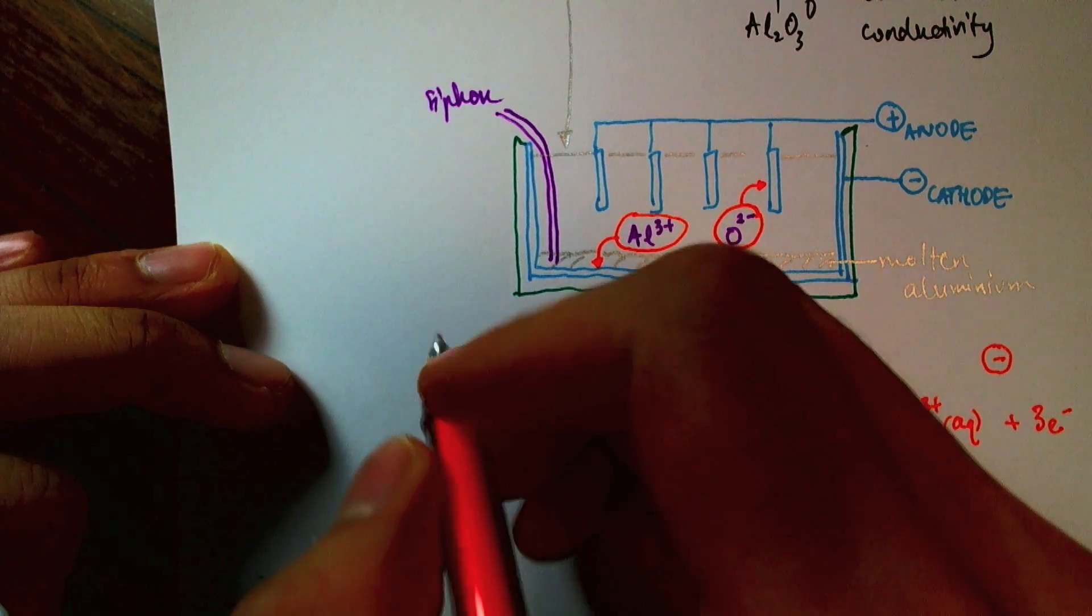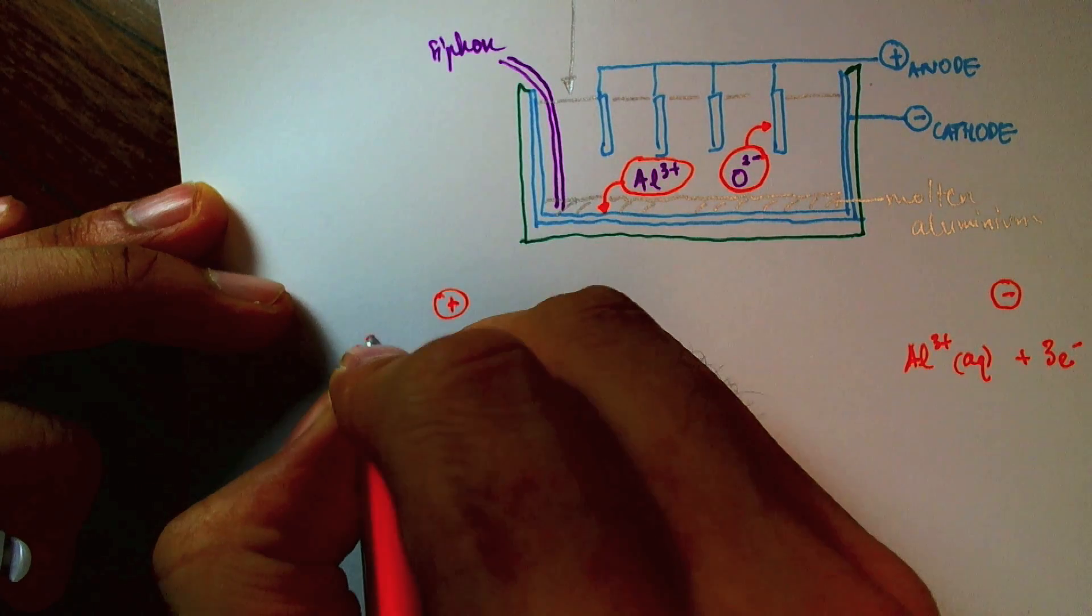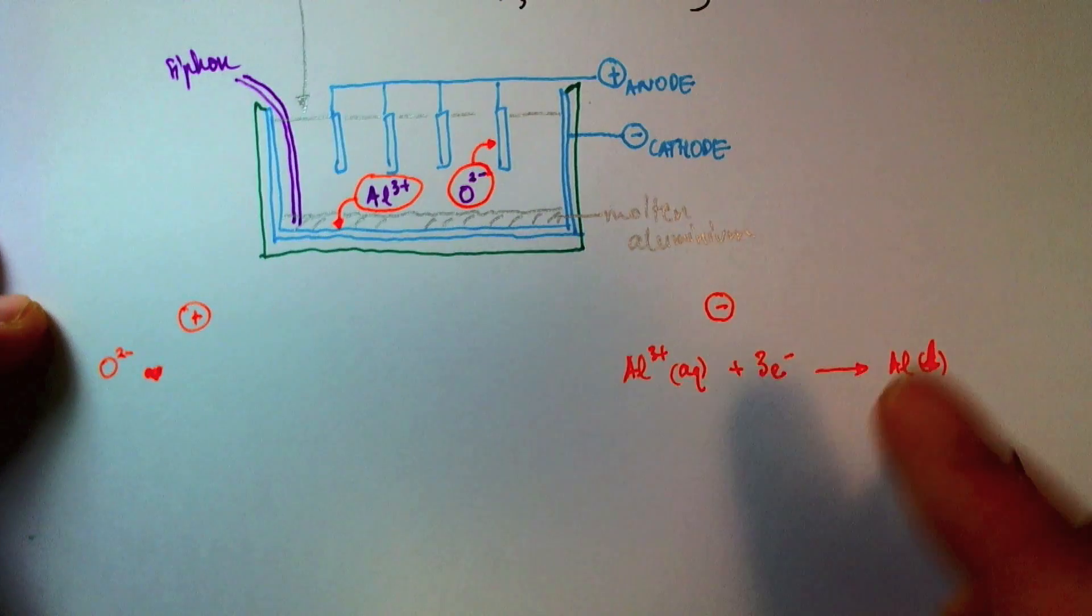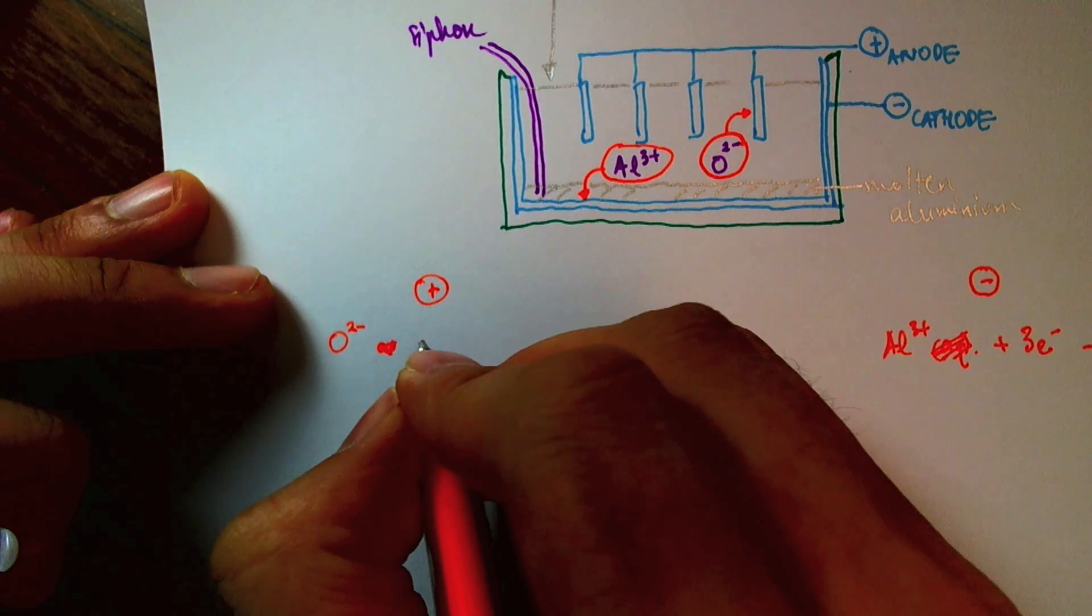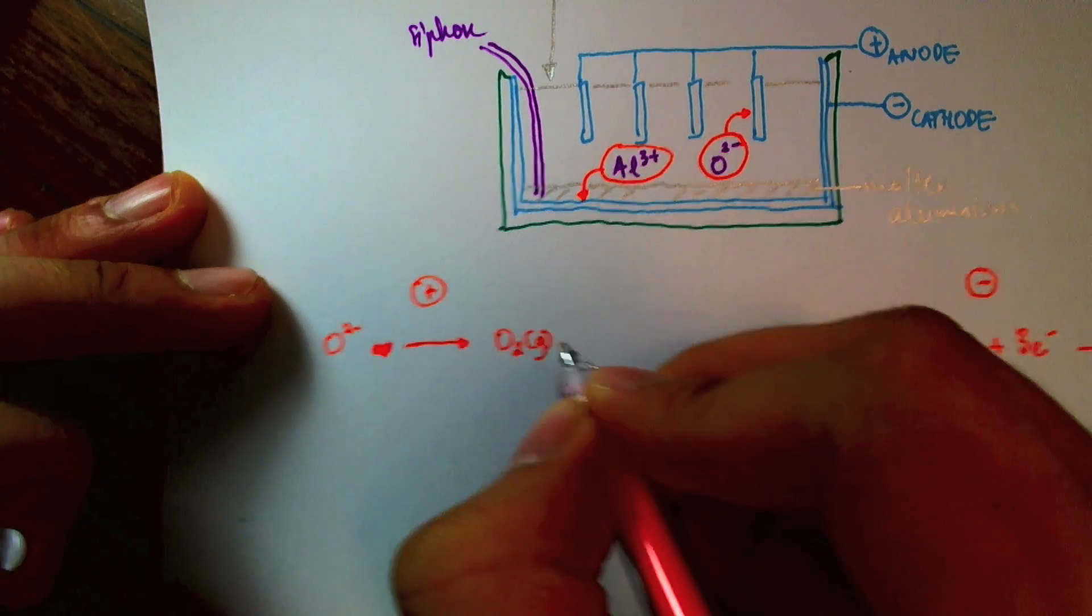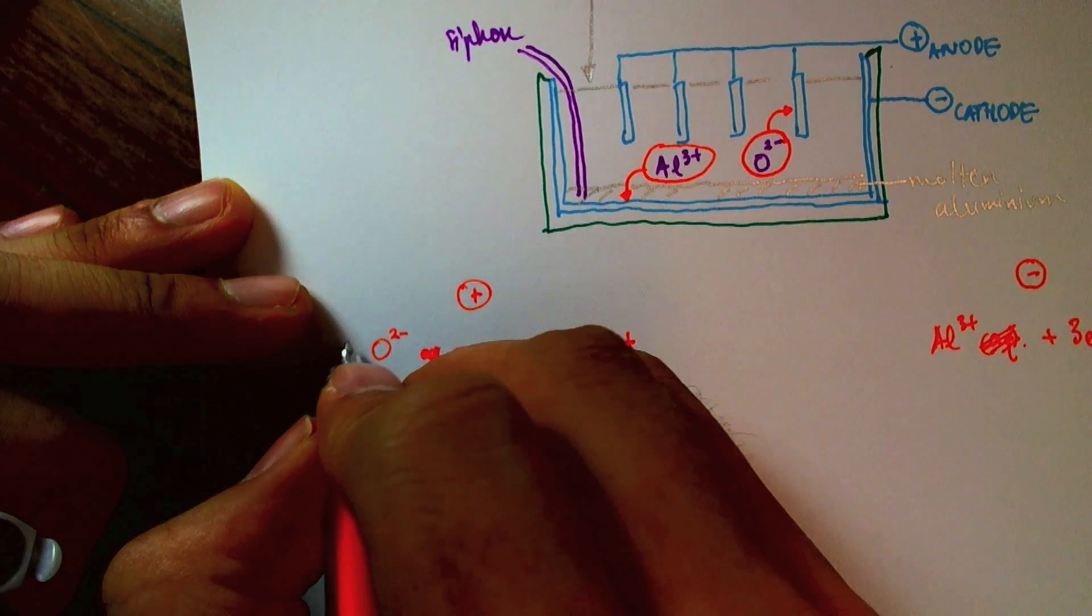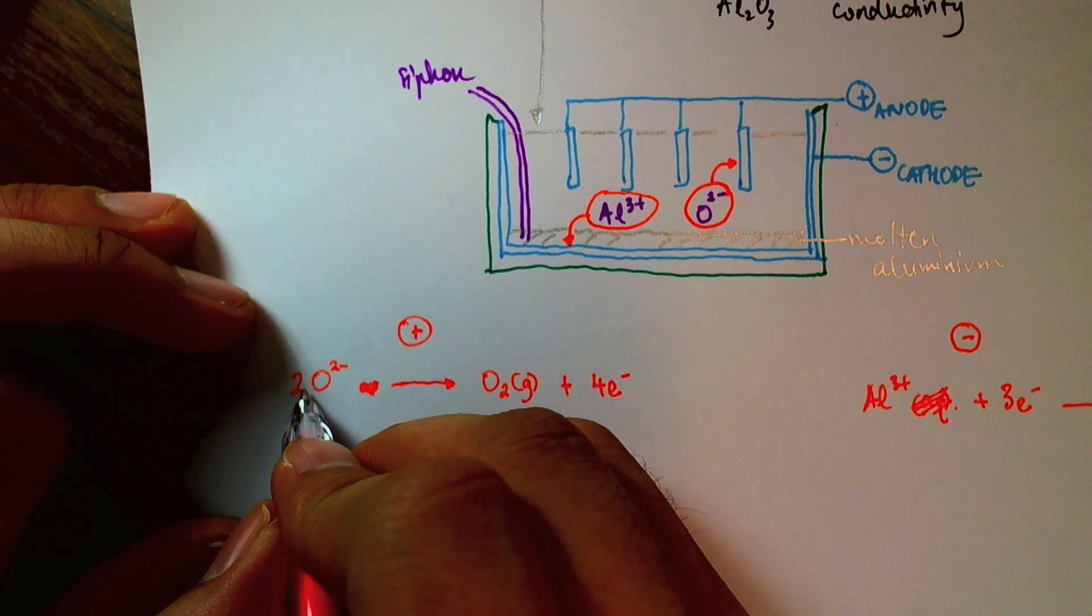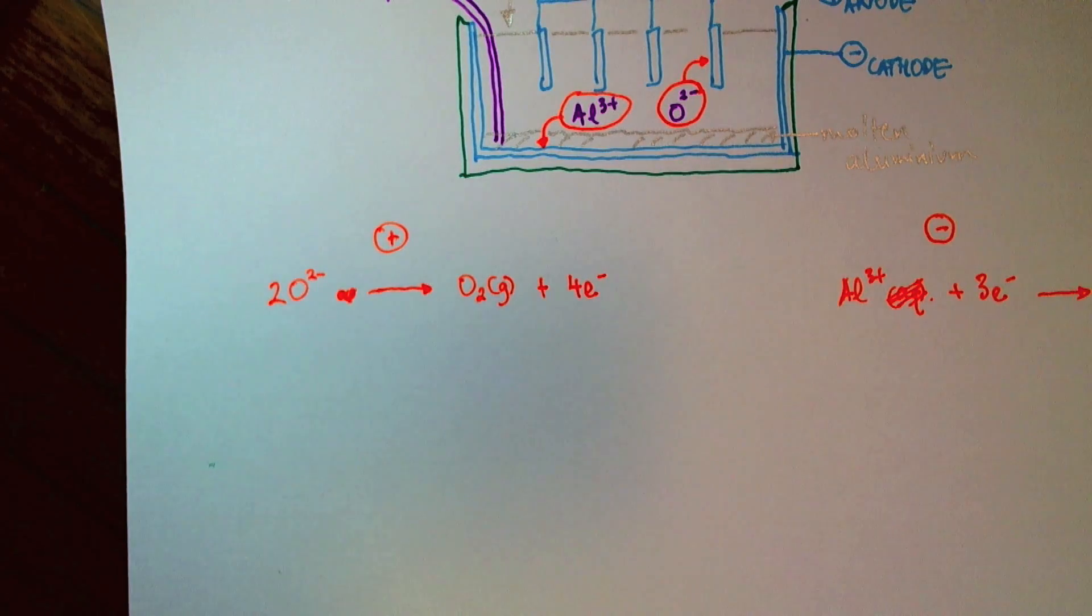At the anode, the oxygen ions... so sorry, this shouldn't be aqueous since it's in a molten state. So the oxygen ions, O²⁻, will give up their electrons to form oxygen gas. So since I have two oxygens here, I need two of them here. They'll give me a total of four electrons. Because two times two electrons here gives me four electrons. So that will be the equation at the anode.